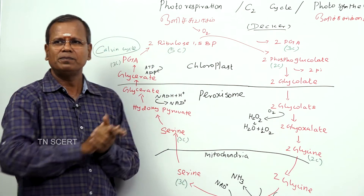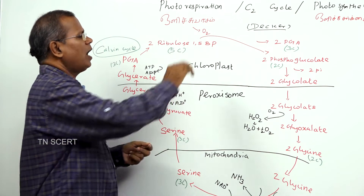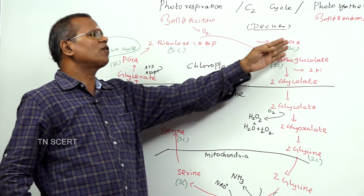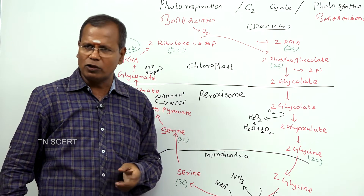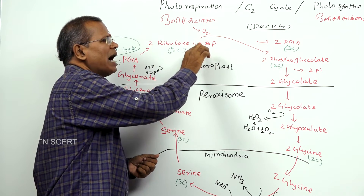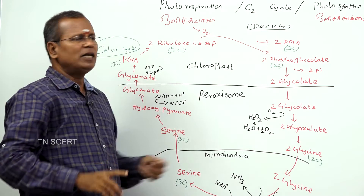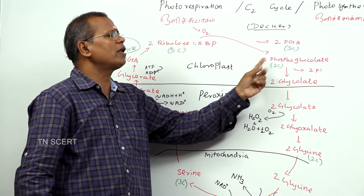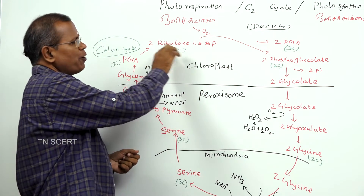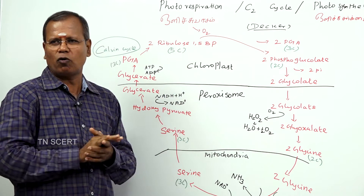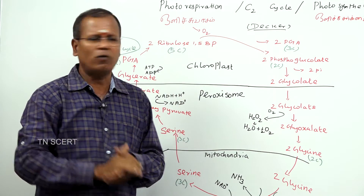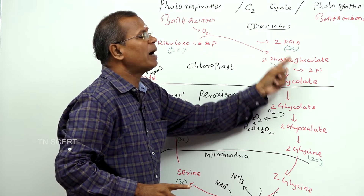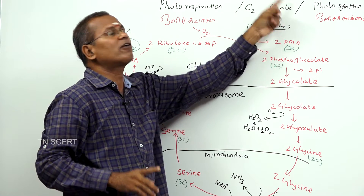See the diagram. Ribulose-1,5-bisphosphate (RuBP) present in the chloroplast combines with oxygen to form phosphoglyceric acid and phosphoglycolic acid (phosphoglycolate). RuBP is a 5-carbon compound. Phosphoglyceric acid is a 3-carbon compound. Phosphoglycolate is a 2-carbon compound — the first stable chemical formed in this process. So the cycle is called the C2 cycle, and the plants are known as C2 plants.